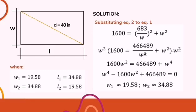So magiging 1,600 width squared equals 466,489 plus width to the 4th power. Ililipat naman natin yung width to the 4th power sa pinakauna, kaya magiging width to the 4th power minus 1,600 width squared plus 466,489 equals 0.